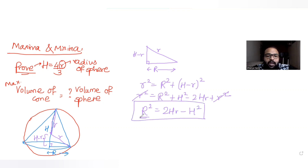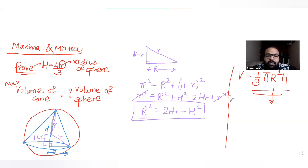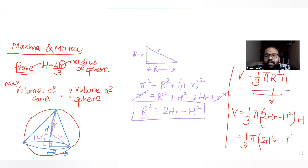I'm writing it in terms of capital R² because I need the relation between h and small r, the radius of the sphere, and I need to eliminate capital R, the radius of the cone. We know that the volume of the cone is (1/3)πR²h. Substituting R² = 2hr − h², volume becomes V = (1/3)π(2hr − h²)h, which gives us volume in terms of altitude h and sphere radius r.